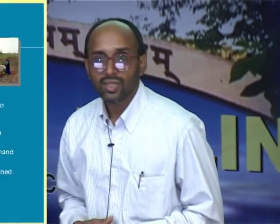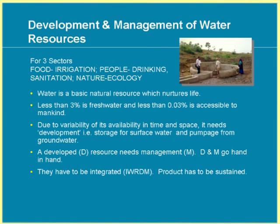Water is used mainly for three sectors: food production through irrigation, drinking and sanitation for people, and nature or ecology — including forests, livestock, and other purposes. These three sectors — food production, human use, and nature/ecology — account for all major water utilization.